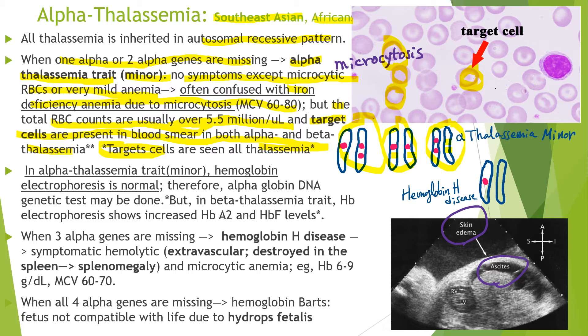It's worth mentioning that patients with hemoglobin C disease can also have target cells. In alpha thalassemia trait, hemoglobin electrophoresis is normal, but in beta thalassemia, hemoglobin A2 and hemoglobin F are increased — we will discuss this later. When you have a patient with a family history of alpha thalassemia seeking genetic counseling before marriage, you may need to order an alpha-globin DNA genetic test to confirm the diagnosis.